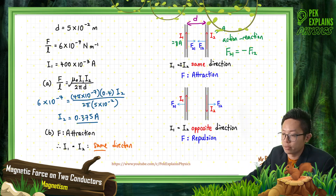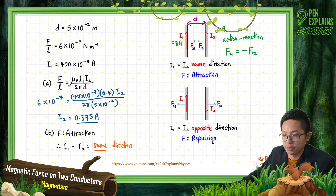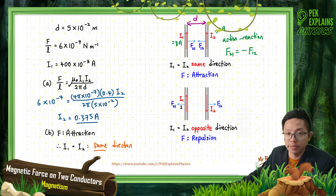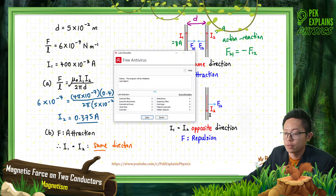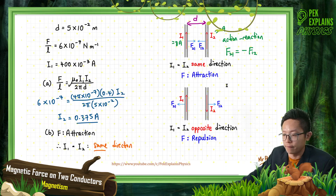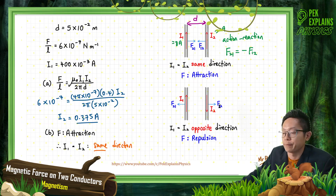To summarize the key rule: if both currents flow in the same direction, there is attraction; if they flow in opposite directions, there is repulsion. For how to derive the force formula for two parallel wires, please refer to the summary videos. That's all — thank you for watching, and let's move on to the next video.